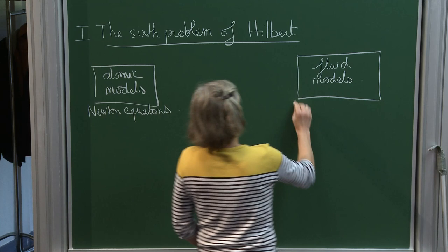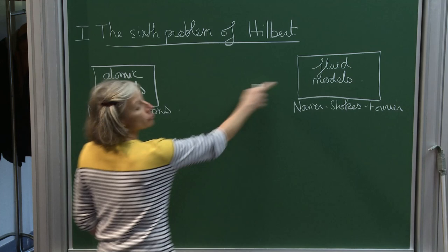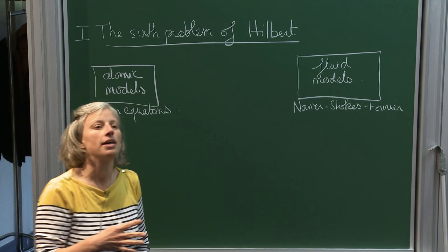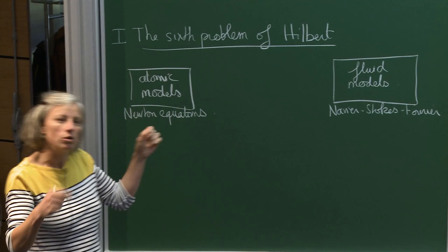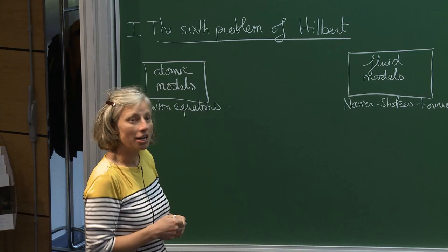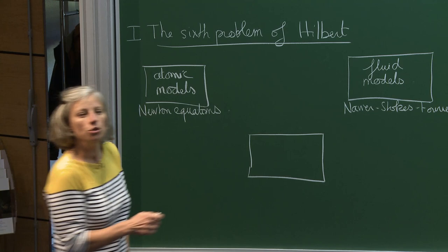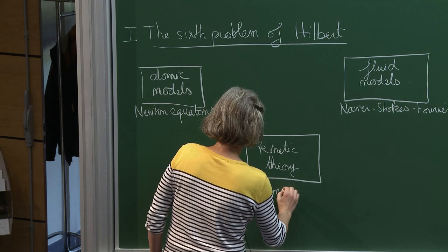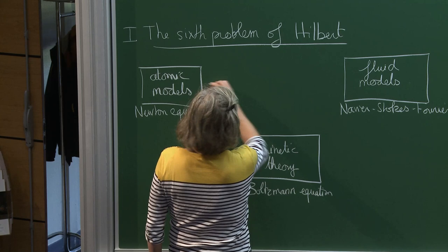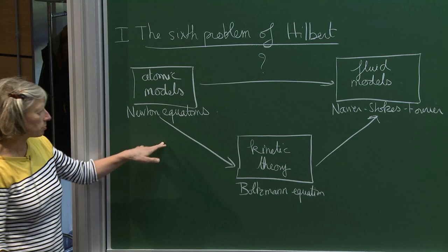We can think about the Navier-Stokes equation, Fourier, and so on. The question posed by Hilbert was to understand the connection between the atomic and fluid levels. He suggested part of the solution by saying that in the case of gases — where particles have weak interactions, there are small particles and a lot of vacuum — you can have an intermediate level of description using kinetic theory, and especially the Boltzmann equation.